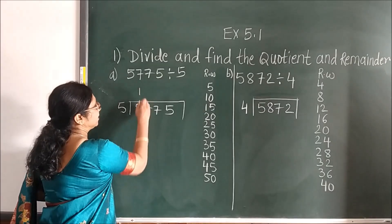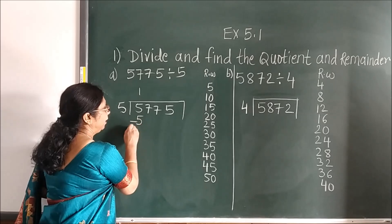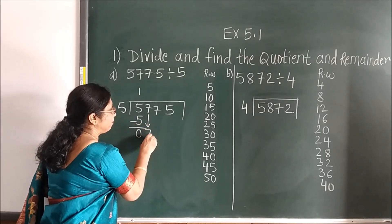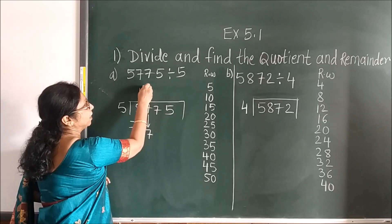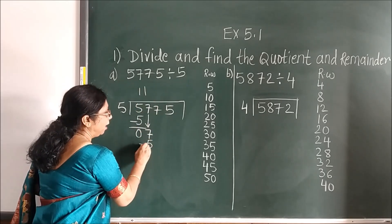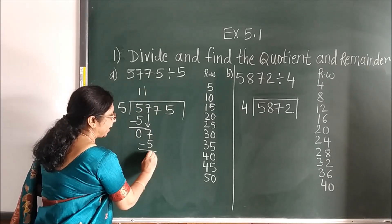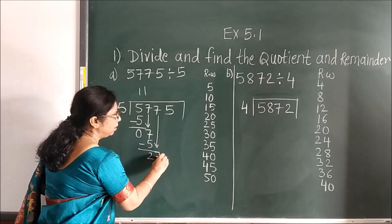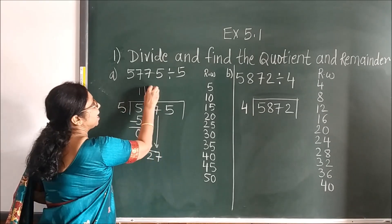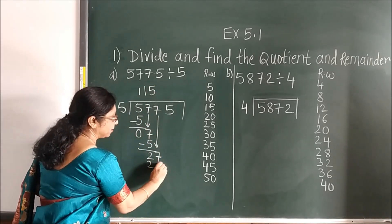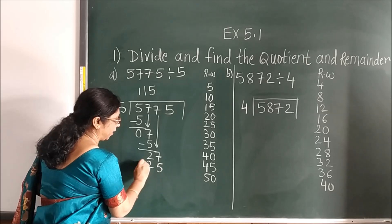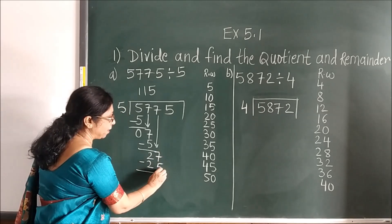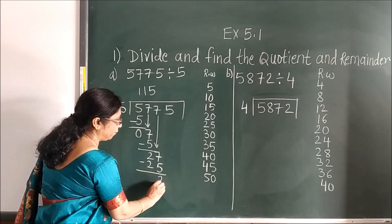5 ones are 5, correct. Then 0, bring the next number down. Now 5 ones are 5 again. Subtract, you will get 2. Bring the next number down. Here 5 fives are 25, because 25 is less than 27. Now subtract 7 minus 5, that gives 2.